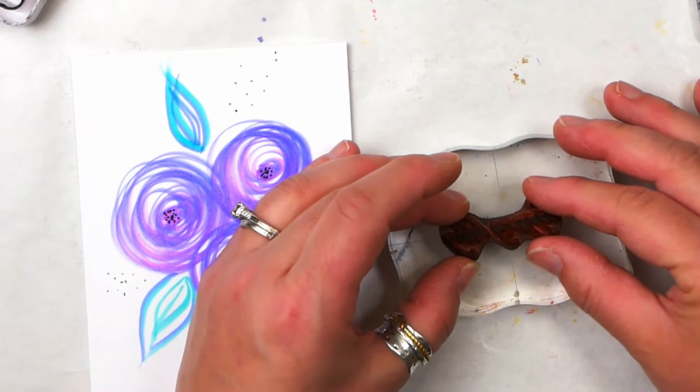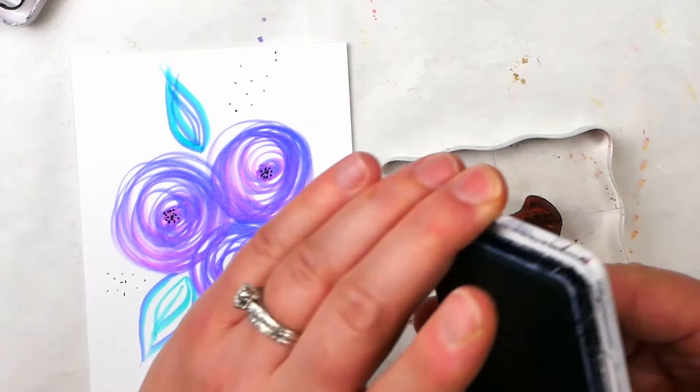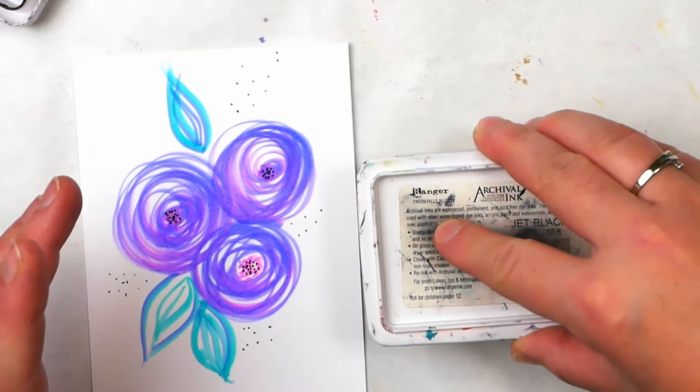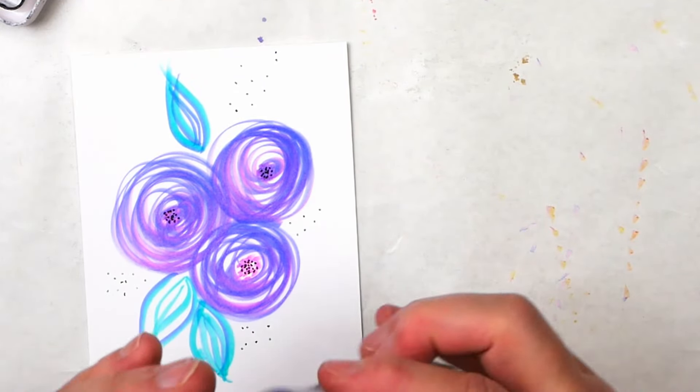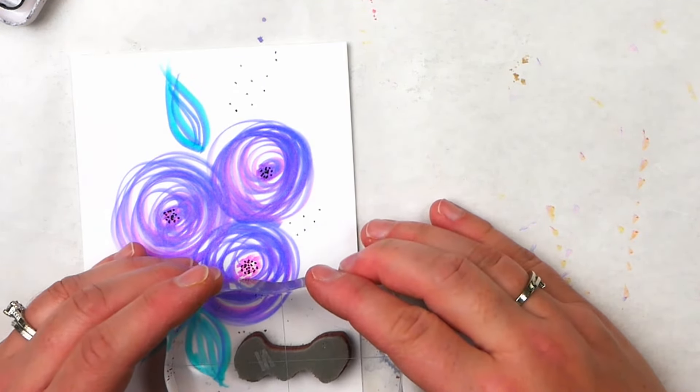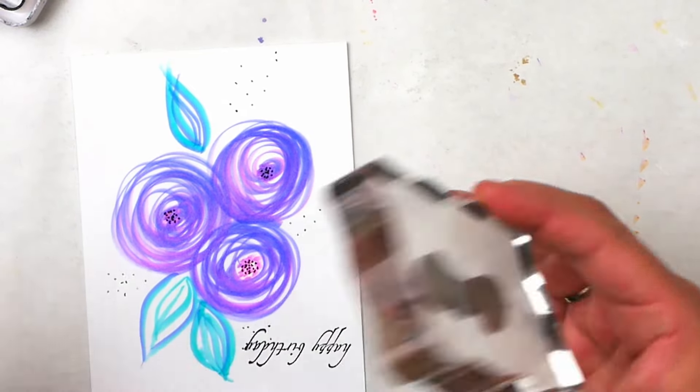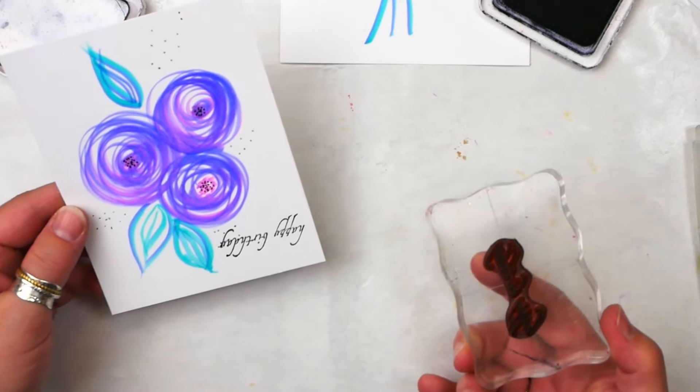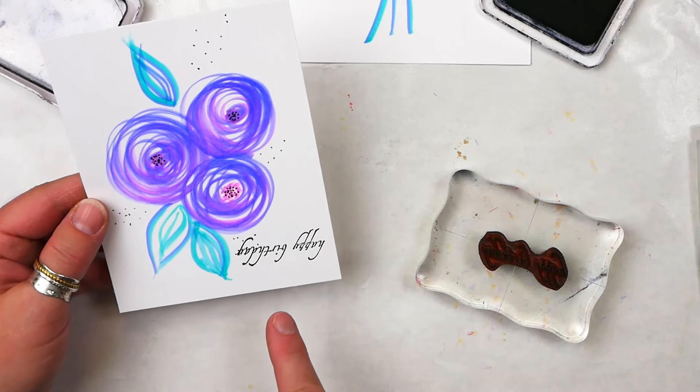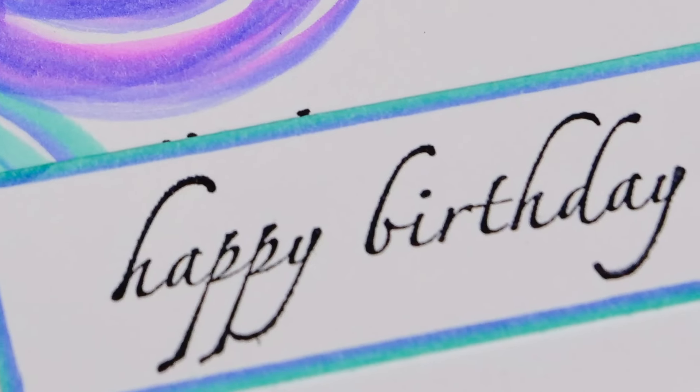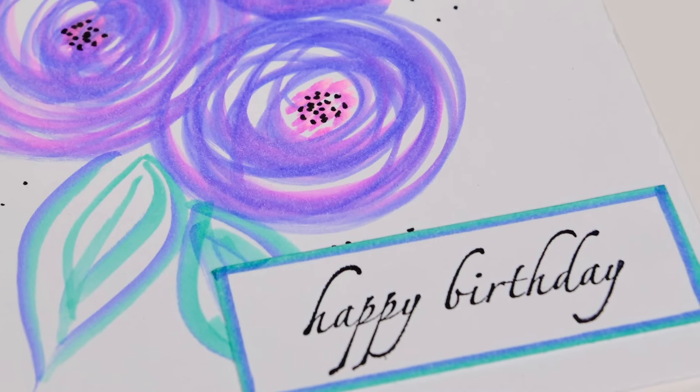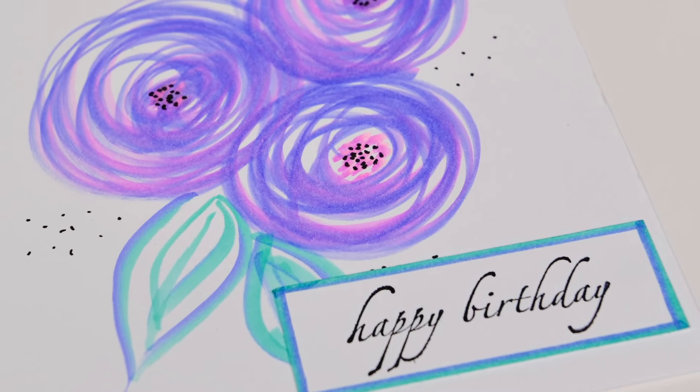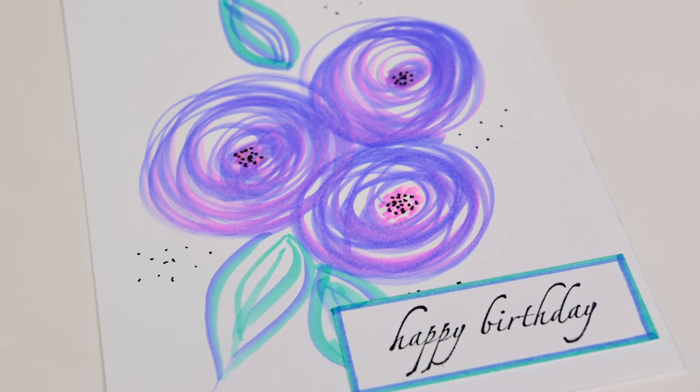The final finishing touch to these cards is to add a nice sentiment or a quote. A couple of nice stamps and an archival ink pad can be the final touch to create these beautiful cards. But what happens if you make a mistake and you stamp them upside down like I did? I didn't realize that was upside down. Oh no. Then all you need to do to fix it is to stamp your sentiment onto a piece of paper, cut it out, rim it with the Mildliner Mix pens and attach it to your card, and it looks just as nice.